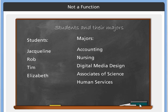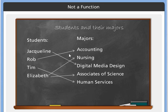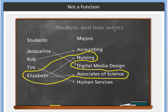Now let's look at an example that might not be a function. We have a list of students as our domain, and we match them to their major — accounting, nursing, digital media design, associate of science, and human services. Jacqueline was digital media design, Rob was accounting, and Tim was in human services. But Elizabeth was both a nursing major and an associate of science, which causes a problem. Since Elizabeth has two majors — more than one output — this is not a function.